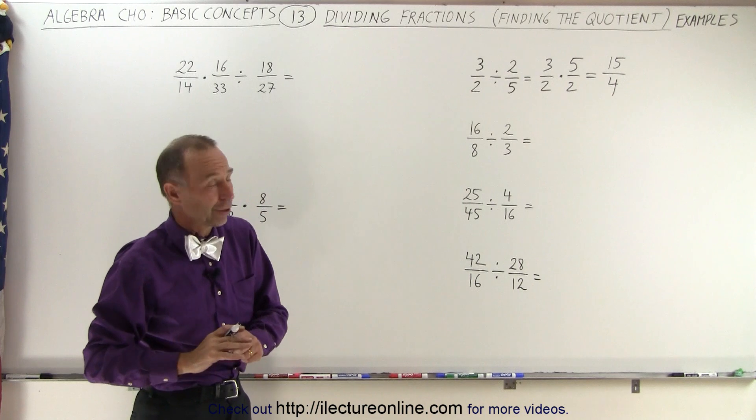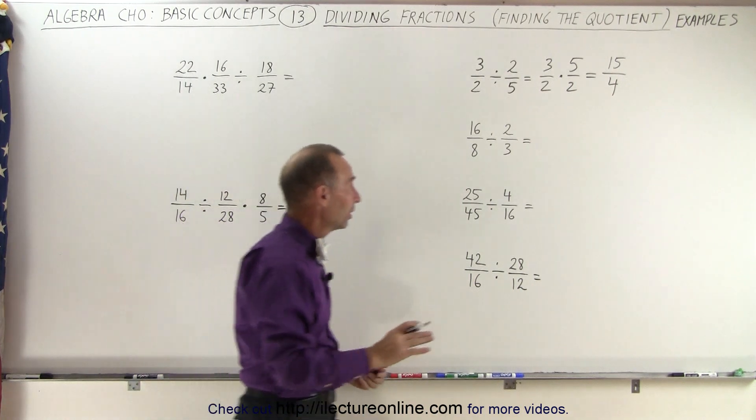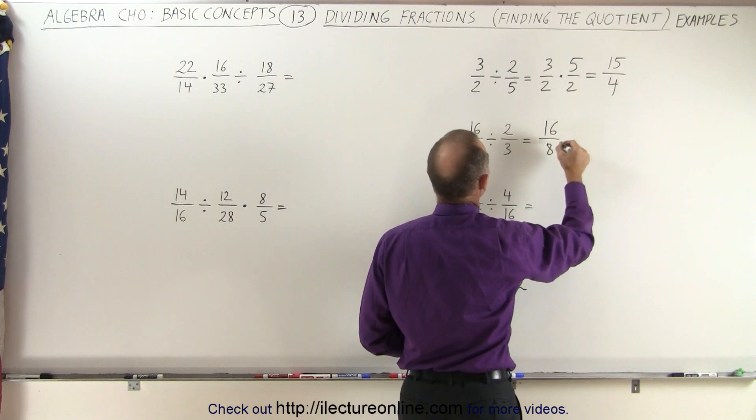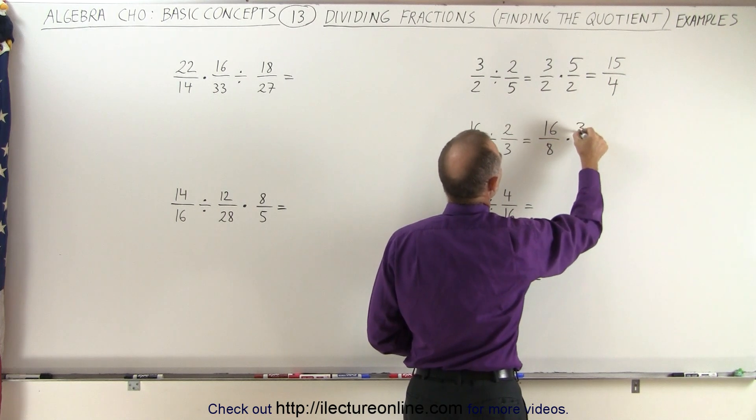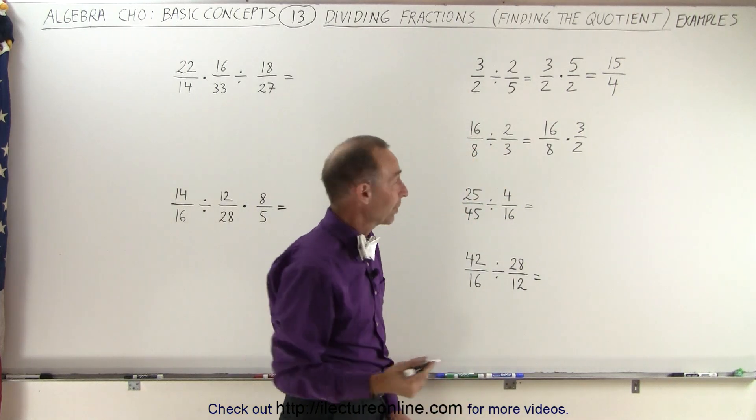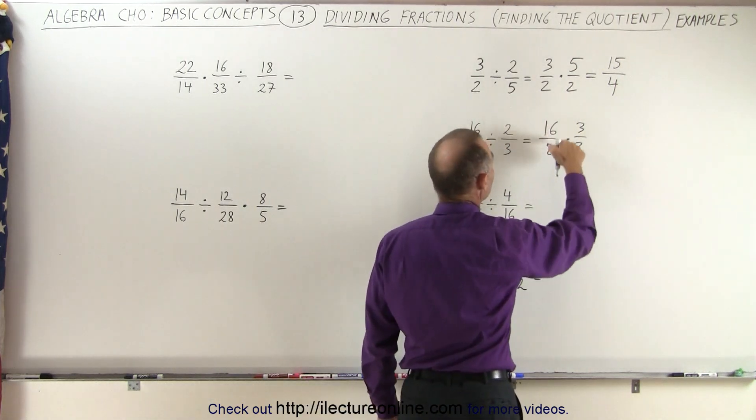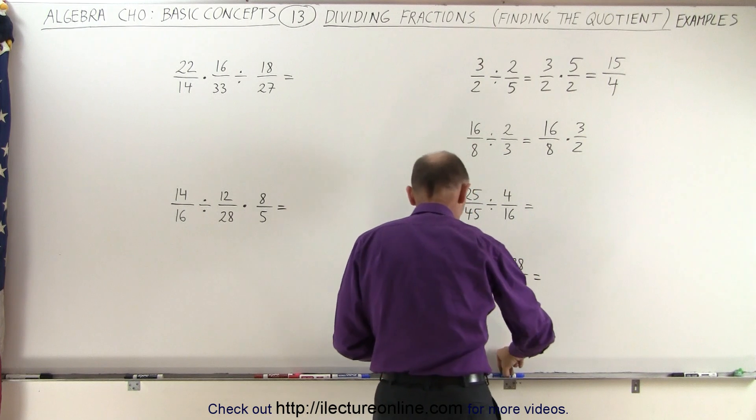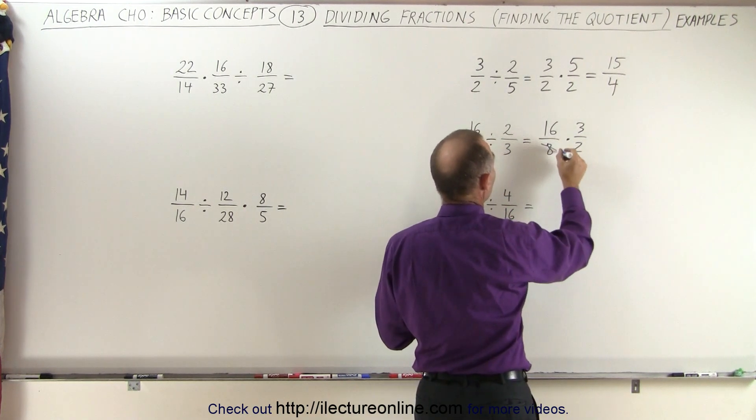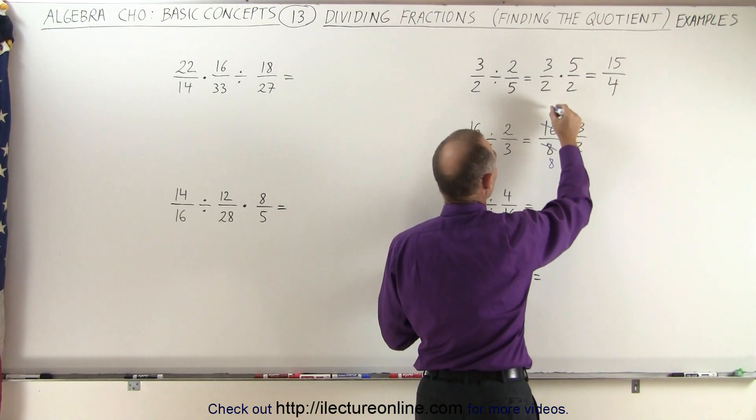Same over here, before you try to do any simplification, let's first turn into a multiplication. So we have 16 over 8 times 3 over 2, and now we can go ahead and try to simplify something. For example, 16 and 8, they're both divisible by 8, so let's divide the denominator by 8, divide the numerator by 8, which becomes 2.